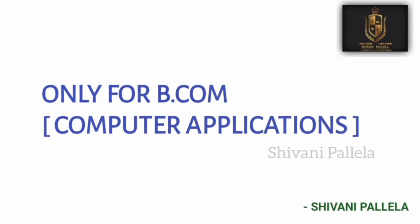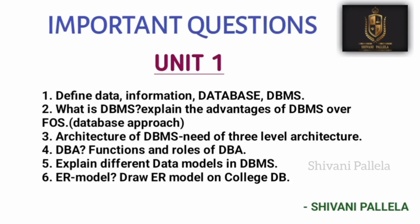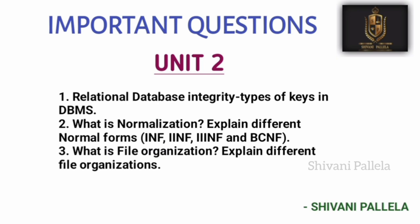I will tell seven to eight questions — try to prepare those. I don't know why so many students fail in RDBMS because it is the easiest subject compared to any other subject in your whole degree from semester one to semester six. From unit number one, the important topics are: ER model, three-level architecture, and what is DBMS. These three are very important. Compulsory one question will come from unit one — prepare ER model, DBMS, and three-level architecture.